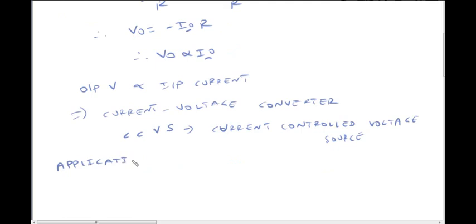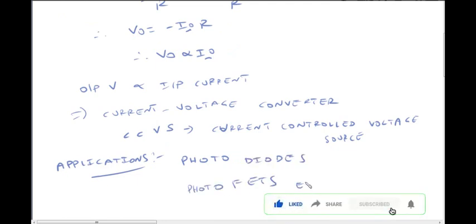Applications of this circuit: current to voltage converter is used in photodiodes and other such applications.